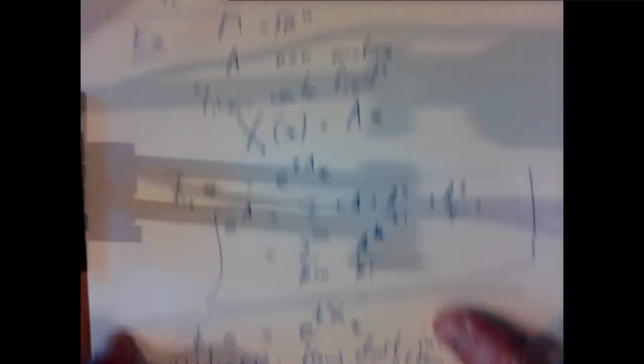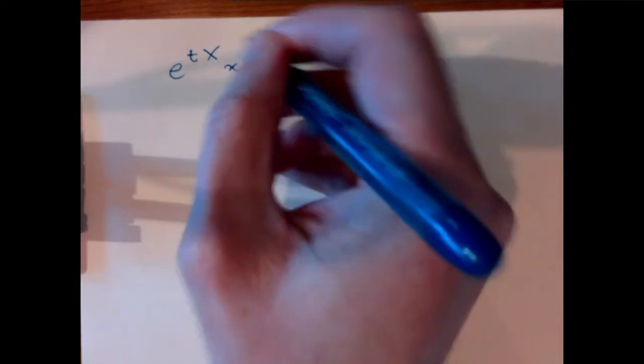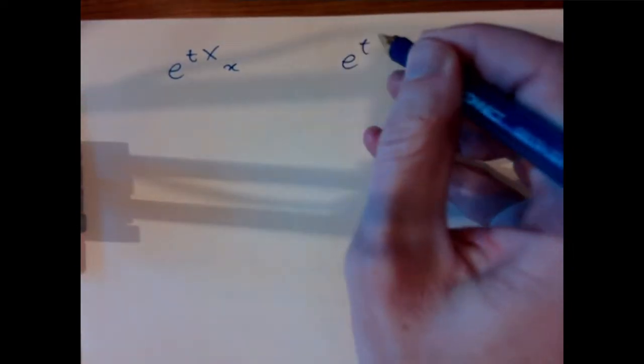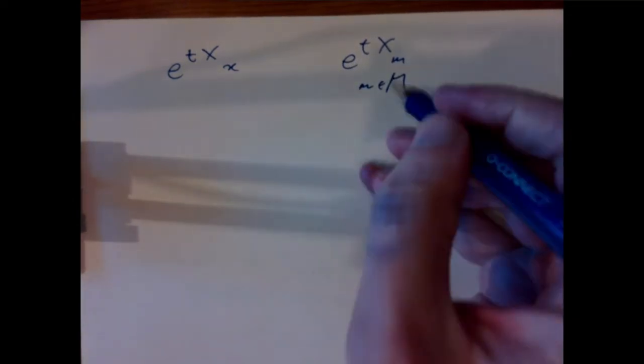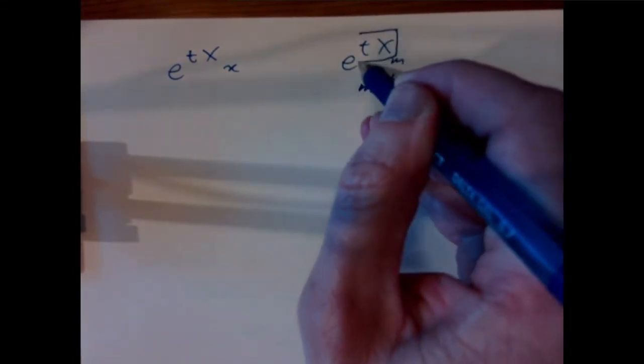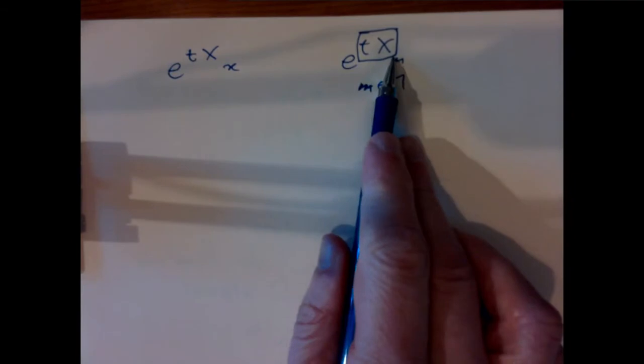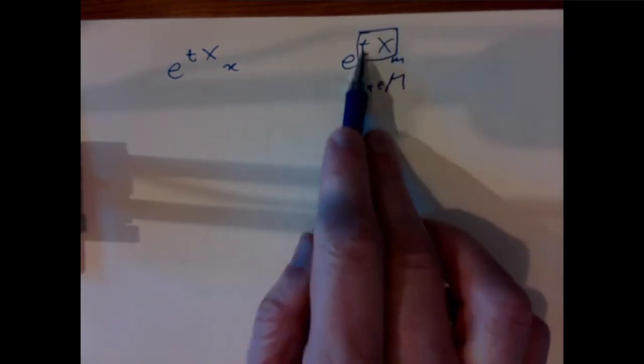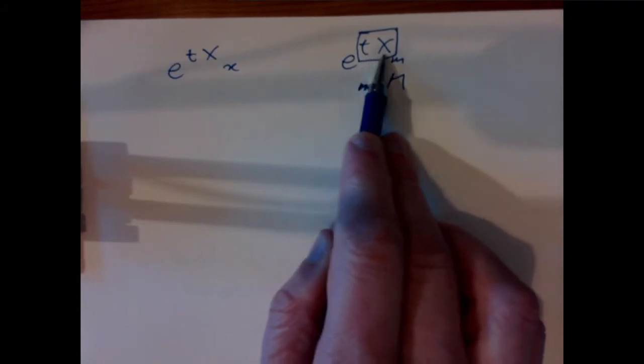There's another, less dangerous aspect of the notation: it suggests that all that matters is the product t times X. I'll leave you to check that that's actually true — the flow really only depends on the product tX, not on t and X individually. So this is actually a helpful part of the notation.